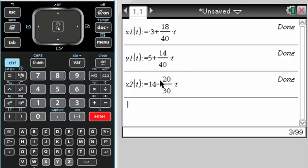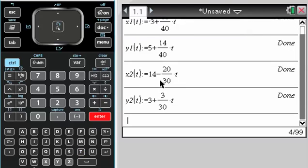That's an obvious one that I should reduce, but whatever. And then y2 of t is set equal to 3 plus 3 over 30, also an obvious reduction, but not doing it. Okay, I get all of that.